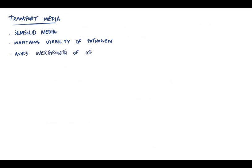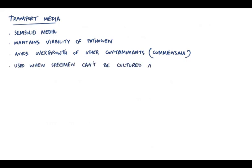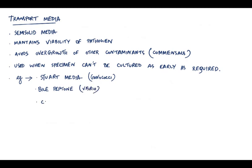Transport media, as we discussed previously, are mainly semi-solid media. They maintain the viability of pathogen and at the same time avoid overgrowth of other contaminants such as commensals. This media is used because commensal bacteria present in the specimen would outgrow the pathogen in the normal nutrient medium. They are usually used when the specimen can't be cultured as early as required. A few examples are Stuart media for gonococci, bile peptone for Vibrio, Cary-Blair for fecal bacteria and glycerol saline.